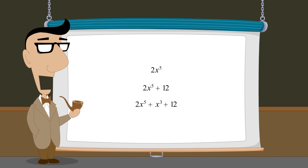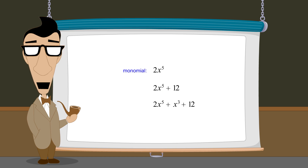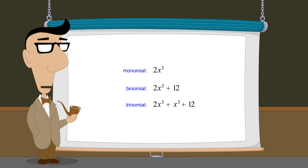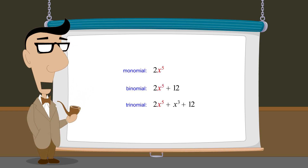These polynomials are referred to as monomials, binomials, and trinomials, respectively. Since the leading terms of all of these examples contain x to the fifth power, these polynomial expressions would be referred to as a fifth-degree monomial, a fifth-degree binomial, and a fifth-degree trinomial.